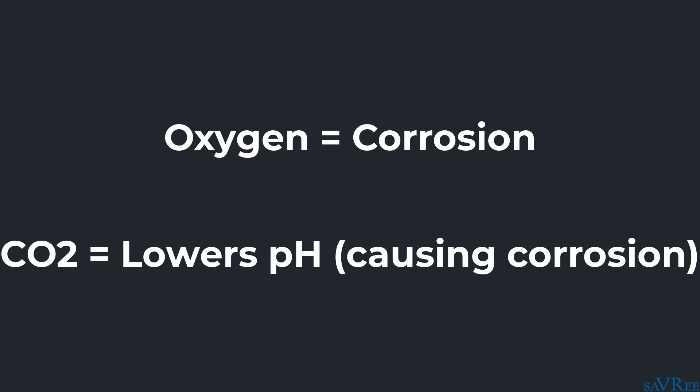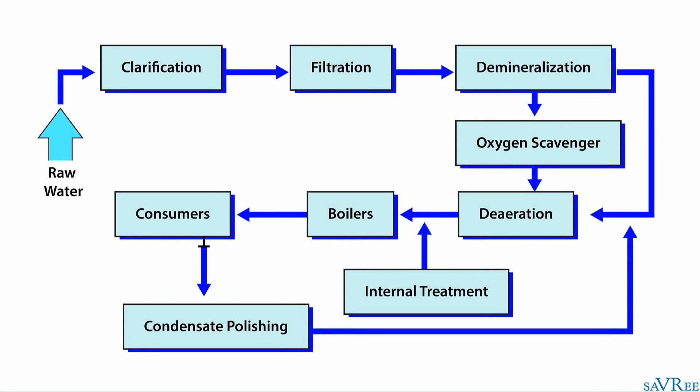Silica is another one that causes issues, but there are many others as well. On this diagram here, you can see a typical water treatment process that you may see within a power station. We've got raw water coming in on the left, a clarification stage, filtration stage, demineralization stage, and de-aeration. Then we have our boilers, consumers, condensate polishing, and then we go back to the de-aeration stage. There's also an internal treatment stage and oxygen scavenging stage. I'm going to explain exactly what each stage within this diagram is doing and show you the equipment that we use to do it.